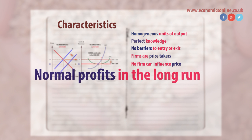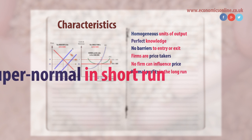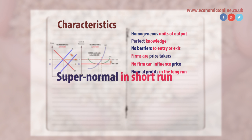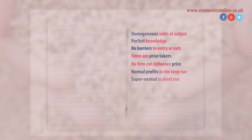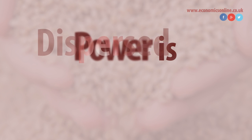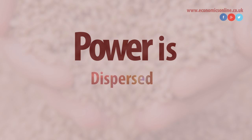In the long run, firms make only normal profit, but in the short run they can make supernormal profits. Power in the market is dispersed between all firms.